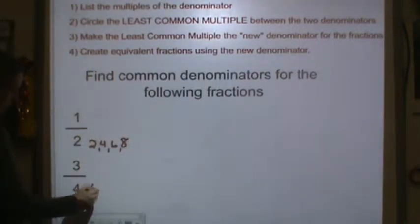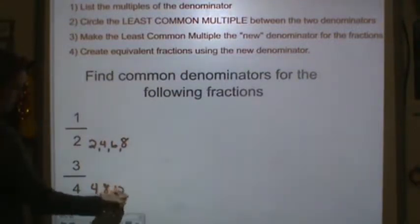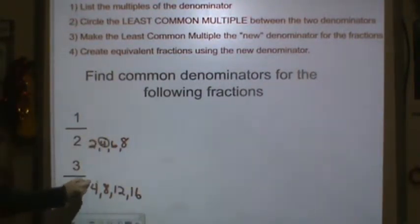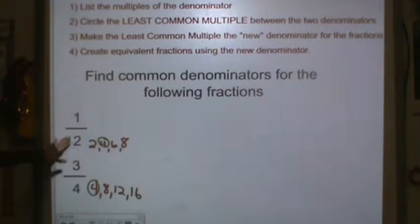Multiples of 4: 4, 8, 12, 16. Next we're going to circle the least common multiple. Well 4 is the least common multiple between 2 and 4.